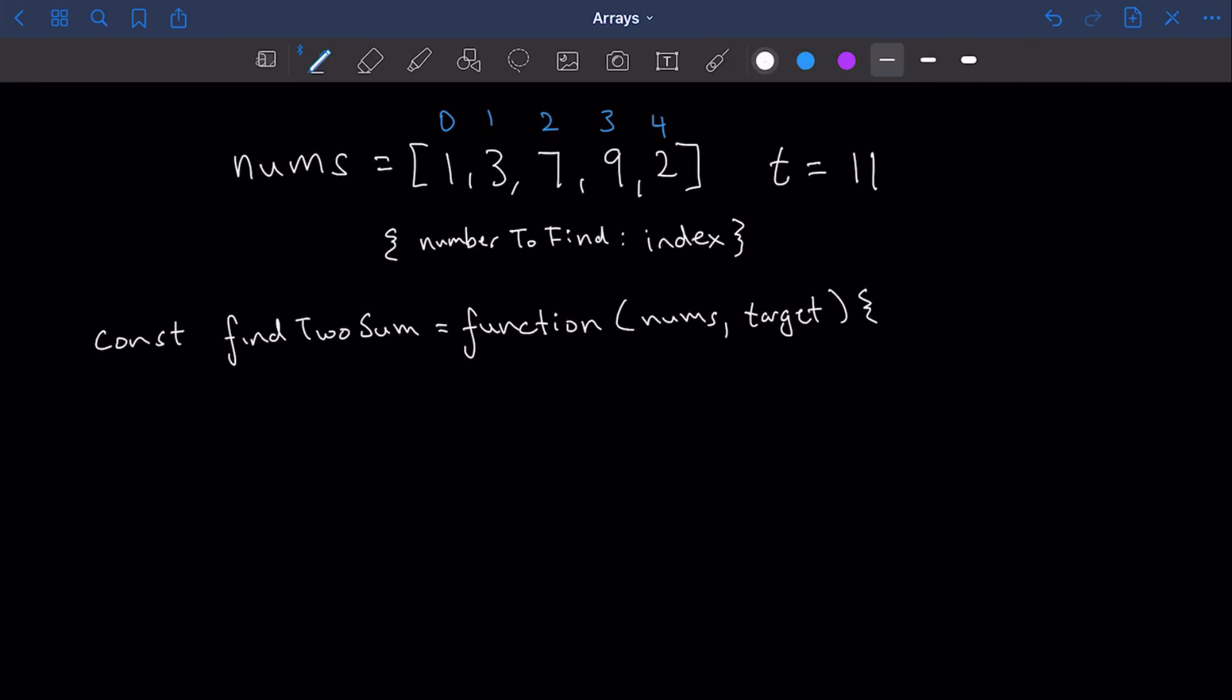So if you'll notice right here in the middle, I have written this little object that reminds us of what the key and the values will be. The key is going to be the number to find that we're looking for, for any respective number that we are currently on, and the actual value is going to be the index of the opposing pair that gets generated.